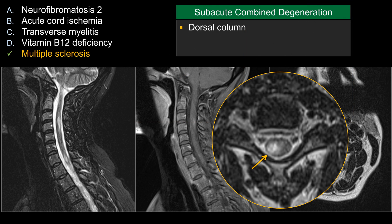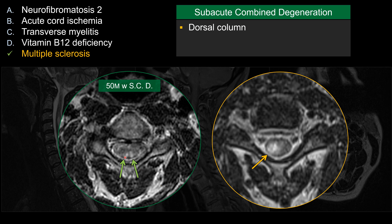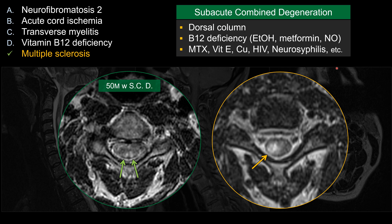For choice D, vitamin B12 deficiency, or subacute combined degeneration, the classic involvement is the dorsal column. If you see symmetric dorsal column involvement, think about subacute combined degeneration. Vitamin B12 deficiency can be due to chronic alcohol abuse, metformin, or nitrous oxide abuse. Other toxic-metabolic processes that can cause dorsal column involvement include syphilis (tabes dorsalis), HIV myelopathy, copper deficiency, vitamin E deficiency, and intrathecal methotrexate toxicity — which can affect the spinal cord, particularly the dorsal column, in addition to its well-known white matter involvement in the brain.